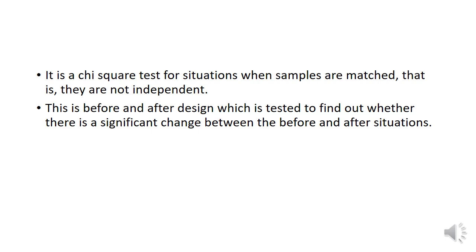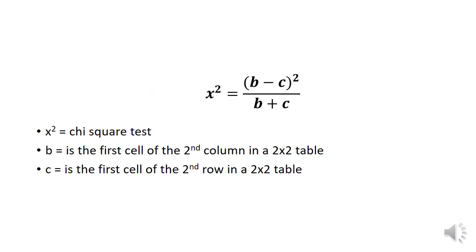This is a before-and-after design which is tested to find out whether there is a significant change between the before-and-after situations. The formula that we are going to use is chi-square equals b minus c, squared, divided by b plus c.